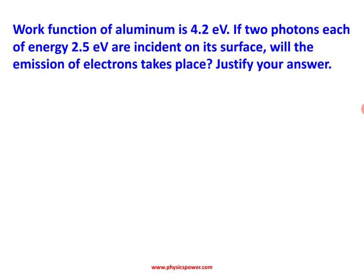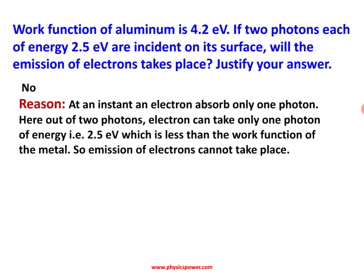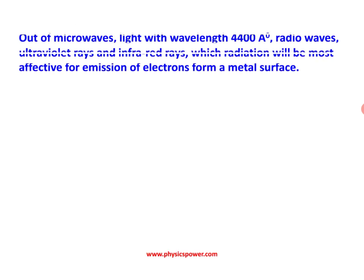Two photons of 2.5 eV each gives a total of 5 eV, which is more than the work function. But photoelectric emission will not take place. The answer is no. Reason: at a time, one electron can absorb only one photon, not two photons simultaneously. According to Einstein's analysis, one photon is absorbed by one electron at a particular time. With that photon energy of 2.5 eV, which is less than the work function, emission cannot take place. Whatever the number of photons (intensity), the energy of each individual photon must be equal to or more than the work function.